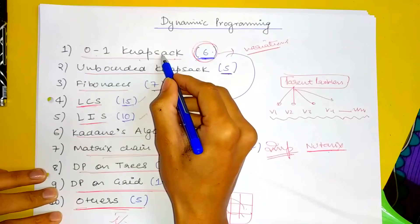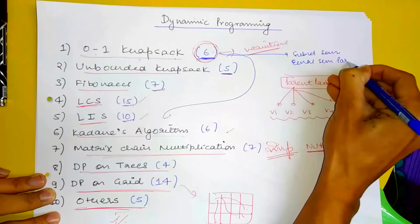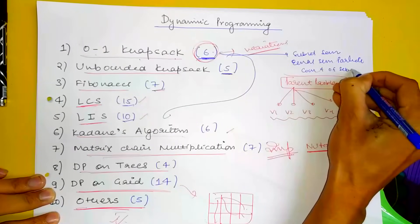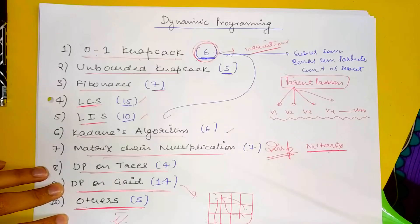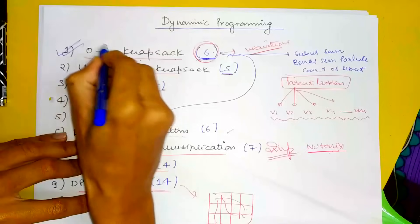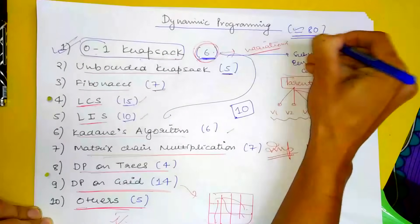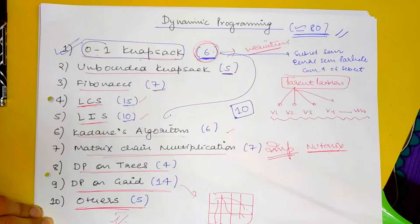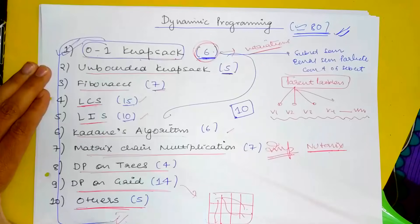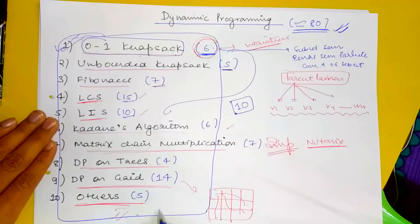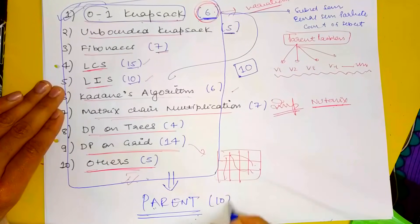If you go into the variations, subset sum equals partition, count subset sum, minimum subset difference — these are variations. In total, if you study these 10 parent problems, you will learn around 80 problems. If you study these 80 problems, there is no question left. These 10 are parent questions — study them and you cover 80 problems.